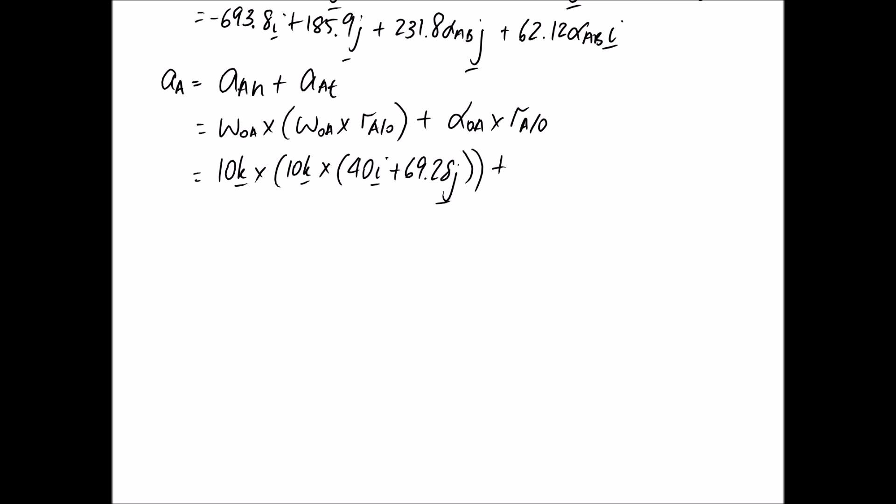Alpha OA, we know this was the one that we were given. It was 5 radians per second squared in the positive direction. And we just substitute in the same radius. Alright, so expanding this out, you want to expand the bracketed part first.